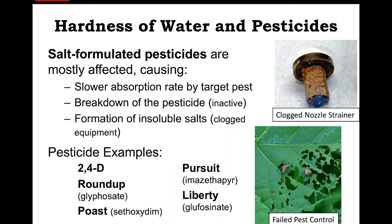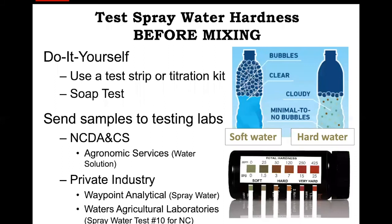How can hard water influence a pesticide application? The dissolved particles in the spray water contain positive ions that can reduce the effectiveness of salt-formulated pesticides, especially if the pH of the water is outside the ideal range. This happens because the pesticide dissociates into positively and negatively charged components, and the positive ions in the spray water bind with the negatively charged portions of the pesticide. This results in molecules that either can't be absorbed by the target pest, are absorbed at a slower rate, or form insoluble salts. A few examples of these salt-formulated pesticides include 2,4-D, glyphosate, cytoxidine, imazapyr, and glufosinate.